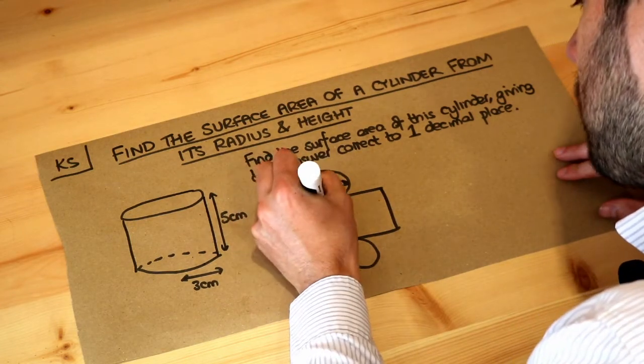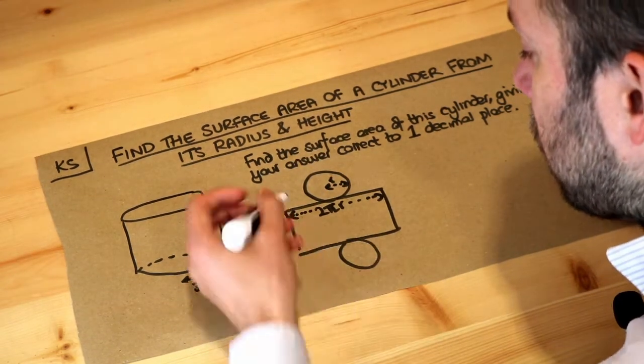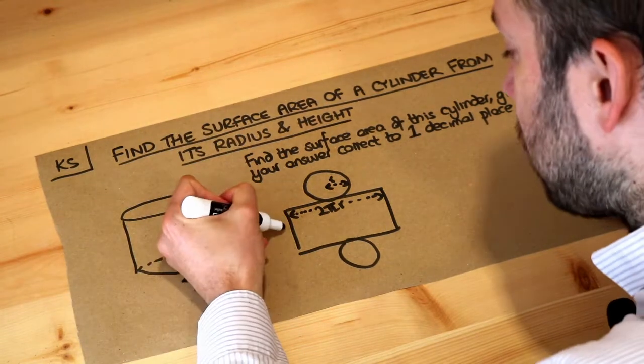So the circumference of a circle, do you remember, is 2πr and then we'll just say that the height of this cylinder is h, h for height.